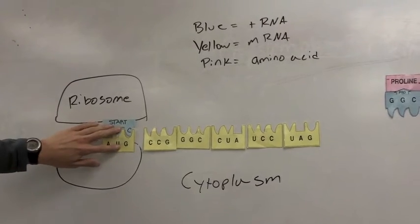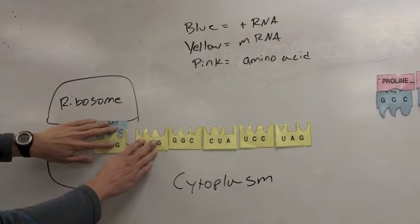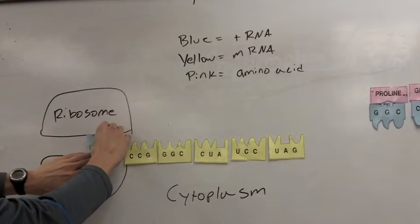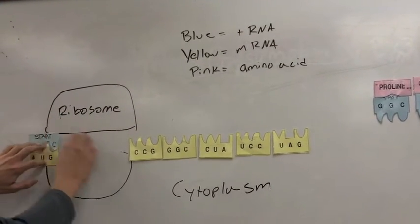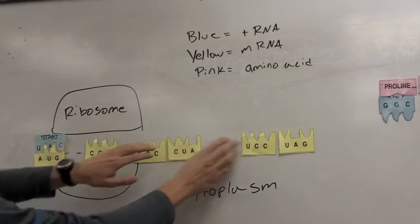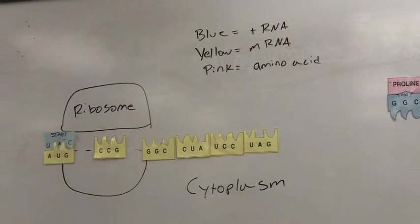And so the messenger RNA strand kind of moves through the ribosome, and I'm going to move this one here. And so then our next messenger RNA moves into the ribosome. These all stay together, but they're magnets, and so they're kind of going to be pulled apart.